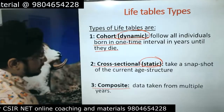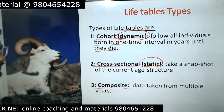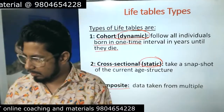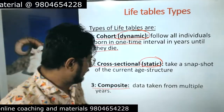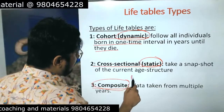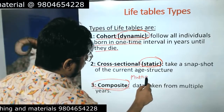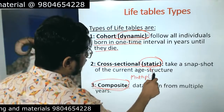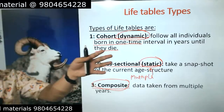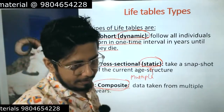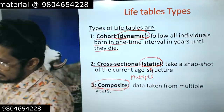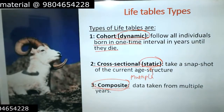The third type is the composite life table, where data is taken from multiple years but not at any regular interval. Basically it combines multiple cross-sectional snapshots — in multiple years you take snapshots of how many individuals are surviving, and put that data together into the table format.